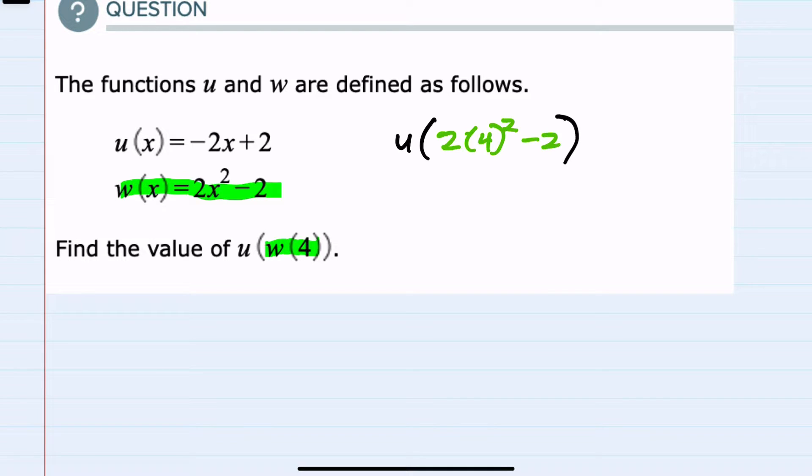And from here, we'll leave that u part on the outside. We can simplify the inside. Following the order of operations, we would start with the exponents. So 4 squared is 16. This would be 2 times 16 minus 2. Simplifying inside, we can now move to multiplication. 2 times 16 is 32 minus 2. And then finally, 32 minus 2 is 30. So we have simplified the innermost to 30.